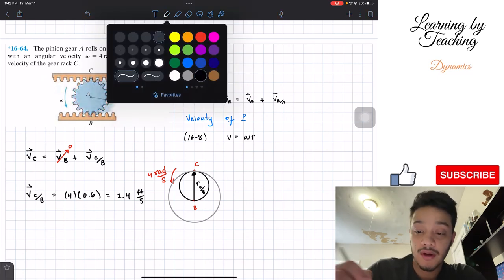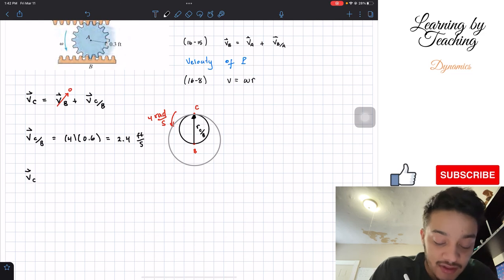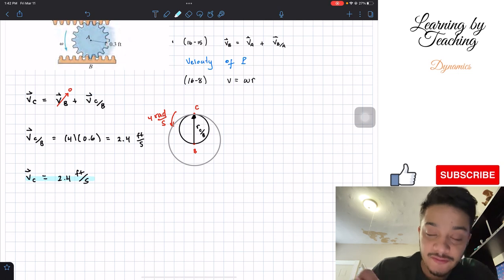Now that we know that, we know the relative velocity of C with respect to B. We can plug it into our equation. Basically, the velocity of C at the end of the day is just going to be 2.4 feet per second and we just found our answer for this problem.